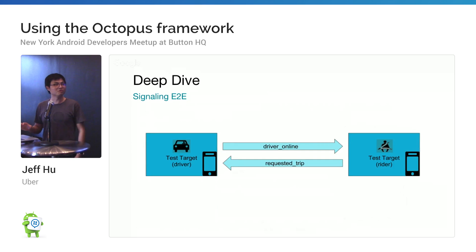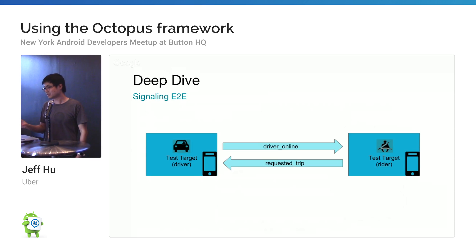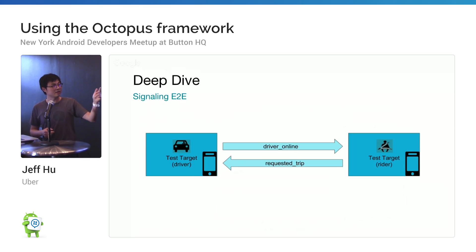This gives you an overview from the test perspective. You only see different test targets — like driver and rider — and the signals between them, like driver online or request trips.